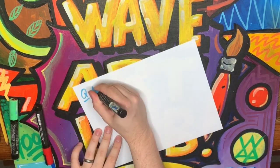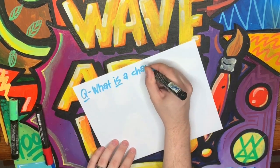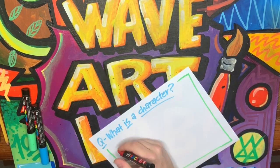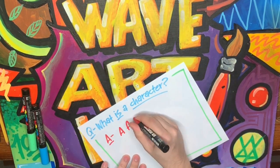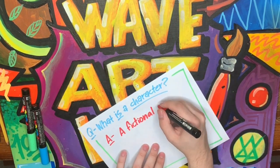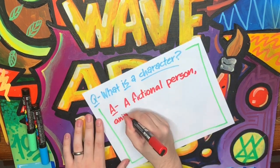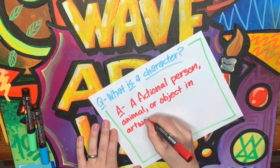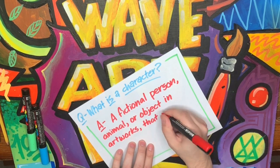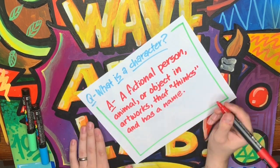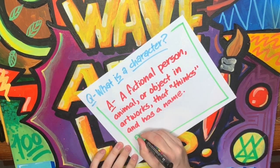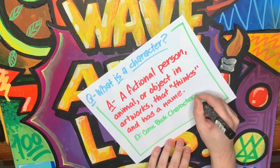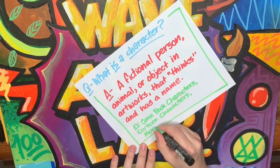Let's start off with a question: what is a character? A character is a fictional or imaginary person, animal, or object in your artwork that thinks and has a name. For example, comic book characters like Superman, cartoon characters like SpongeBob, and movie characters like the Terminator.